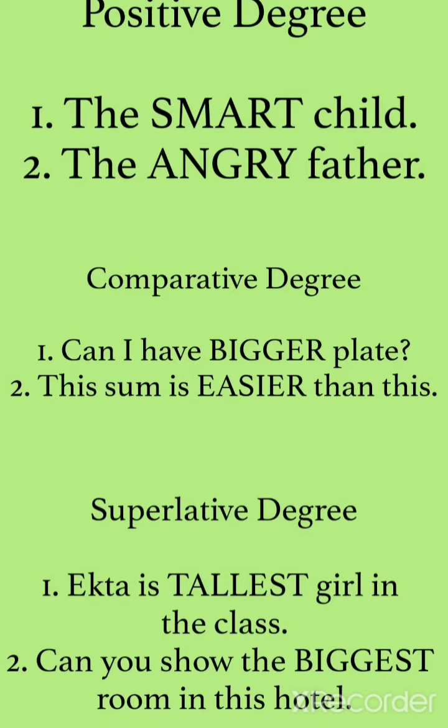Let us look at examples of positive degree first. The smart child. The angry father. Here, smart and angry are written in a simple way, so they are positive degree. For comparative degree: Can I have a bigger plate? This sum is easier than this. Here, bigger and easier are in comparative form, and two things are being compared — one sum is easier than the other.